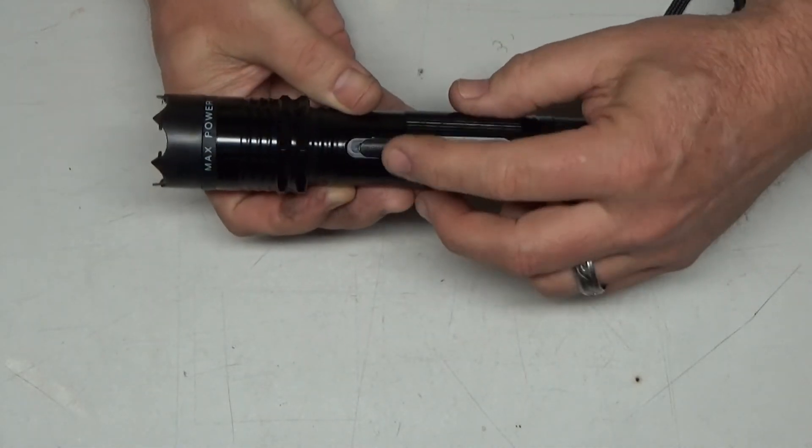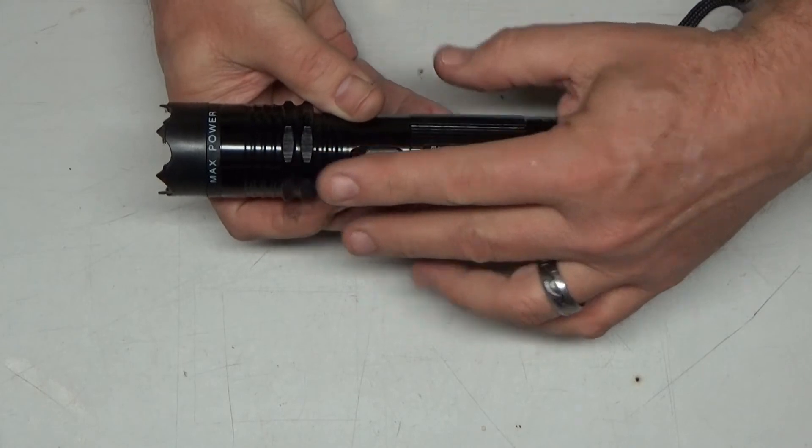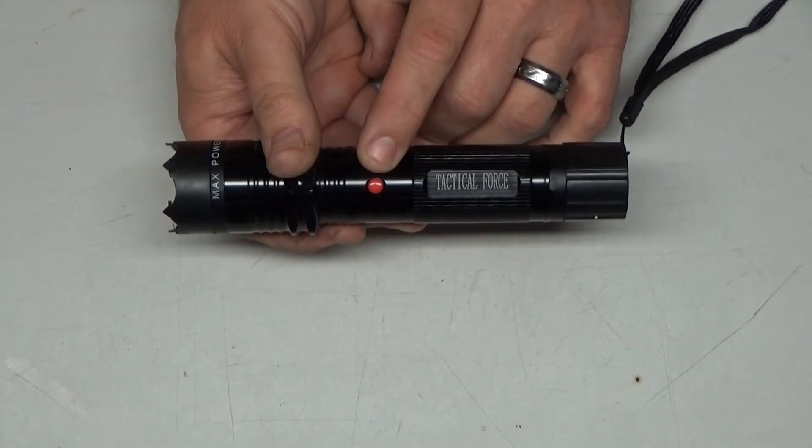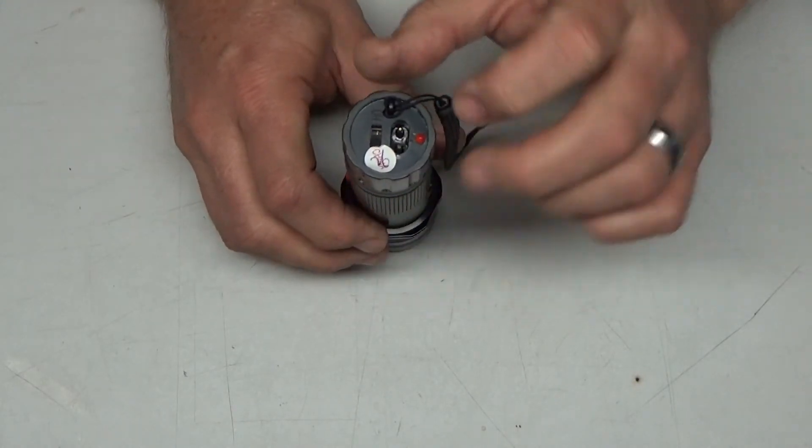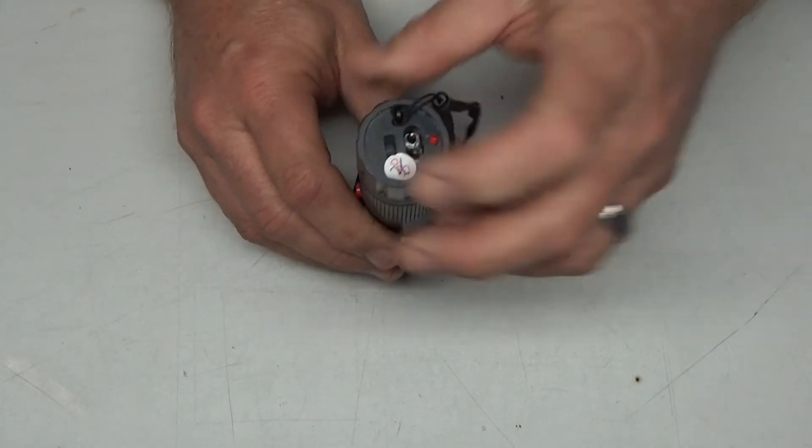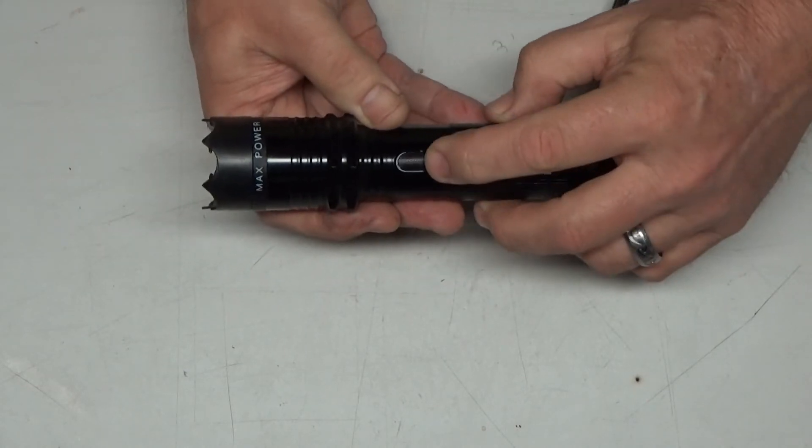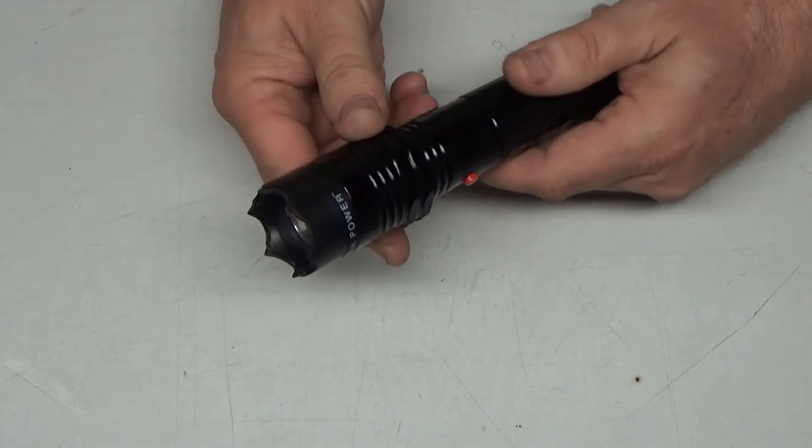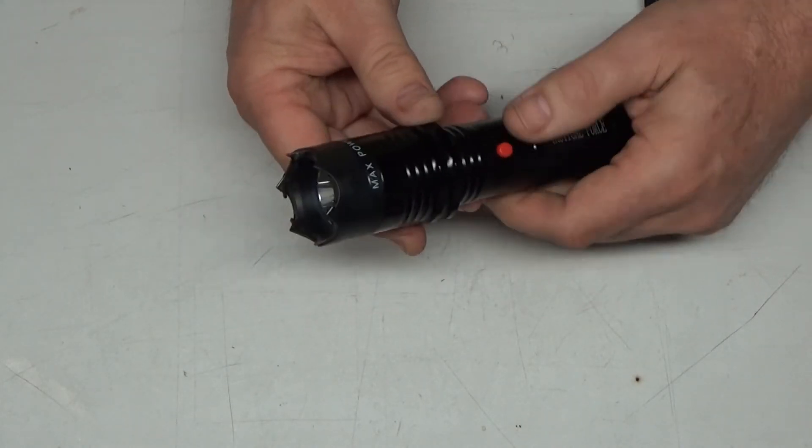So this button has to be all the way in the forward position for the stun gun element to work. This is the button to actually activate the stun gun, but to turn the stun gun on you actually have to turn this button on here. So I'm going to activate the stun gun, put it in the forward position, and one of the things about this is it says that the sound alone is usually enough to maybe deter somebody.